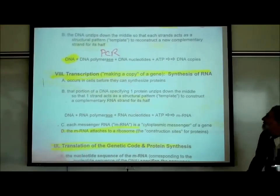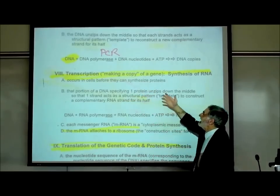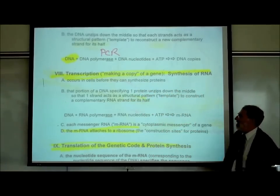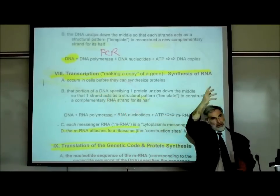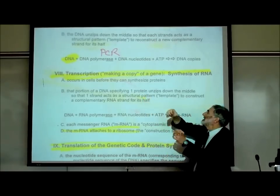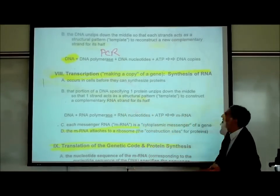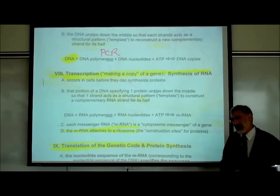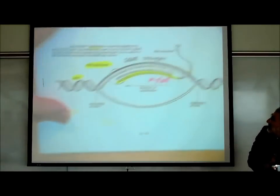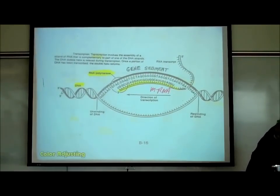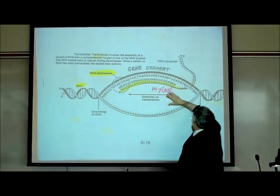That portion of the DNA that specifies a protein is going to unzip, and one of the strands will act as a pattern to construct a complementary RNA strand. We can see that on the bottom of page B16. This is the DNA double helix — the whole long chromosome — and these are the gene segments. There's an instruction for hemoglobin here, insulin here, and melanin over here. We only want to make a copy of the segment containing the instructions for making insulin, or whichever protein that cell is trying to make.